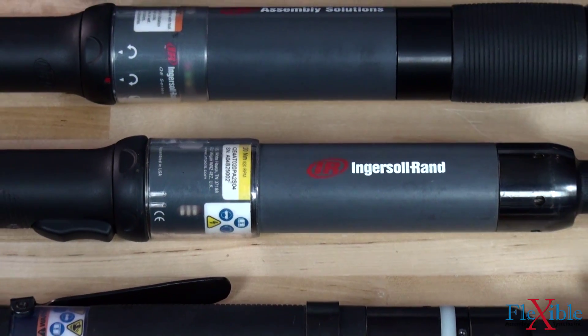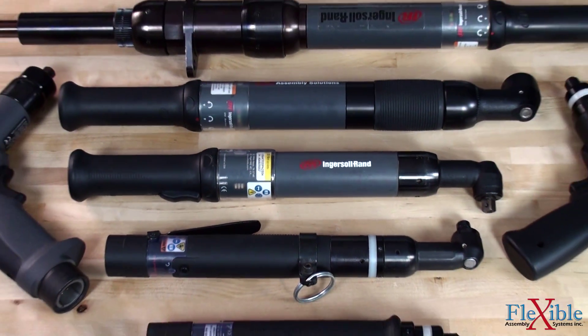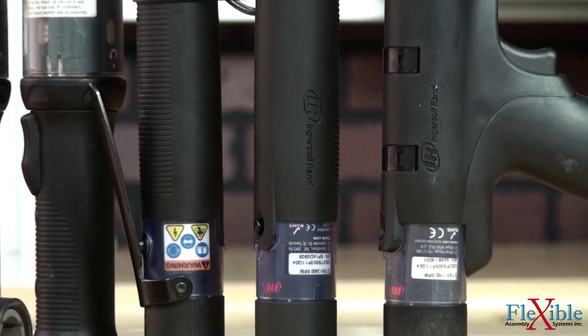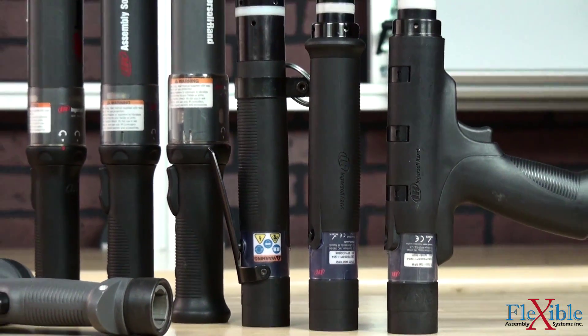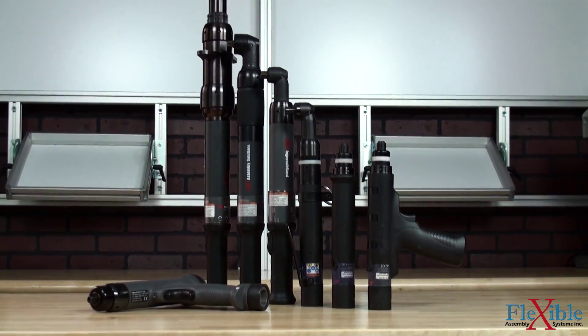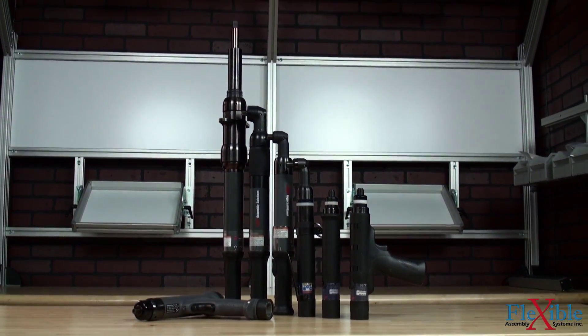The QE series of fixtured and handheld tools deliver excellent accuracy and traceability. QE tools come in a series of inline, pistol, angle, and offset motor configurations and when paired with an insight controller and ICS software offer advanced tightening strategies and data communication.